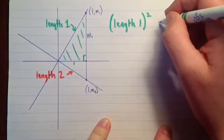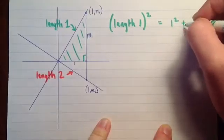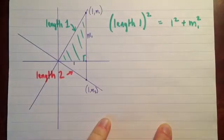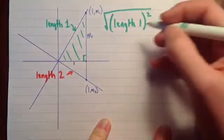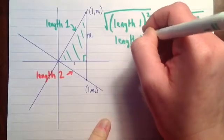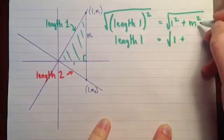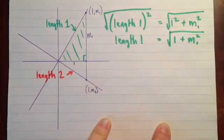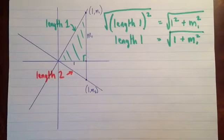So length squared, length one squared, is equal to this side squared plus this side squared. So m1 squared. And then if I just wanted to know what length one was, I'll take the square root of both sides. I have length one equals the square root, and then one squared is one plus m1 squared. So this is a number that we're going to use later. One plus m1 squared. So that's the green length.